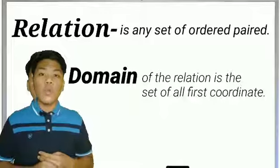A relation is the set of any ordered pair. The domain is the set of all first coordinates, while the range is the set of all second coordinates.